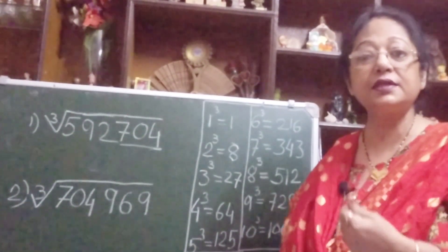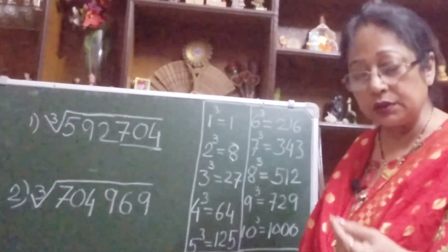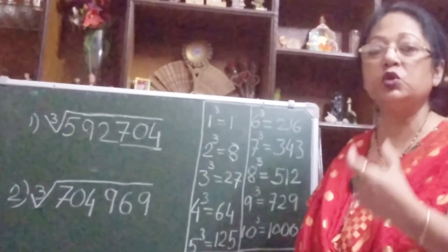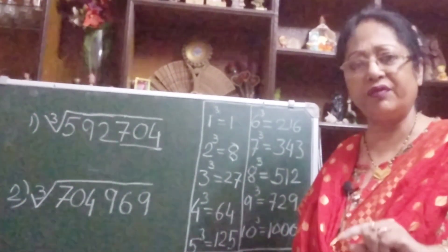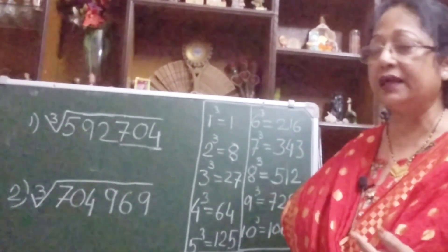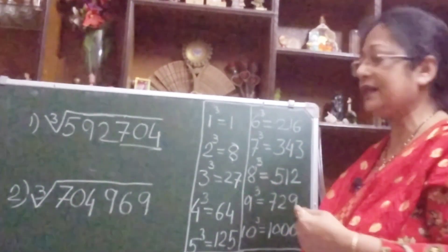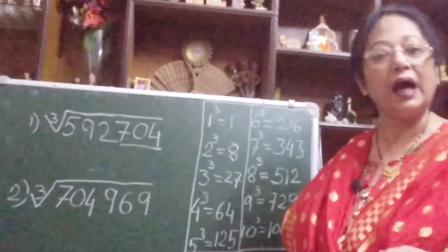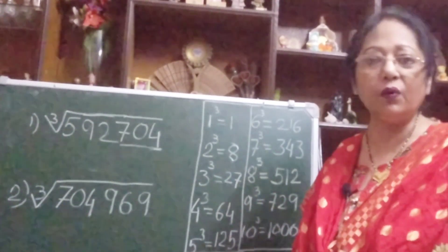Otherwise you won't be able to do it quickly. When you need to find the cube, it will be difficult to calculate. So better you memorize the cubes from 1 to 9. 10 cube everyone knows, 10 cube equals to 1000. Okay, so let's start.